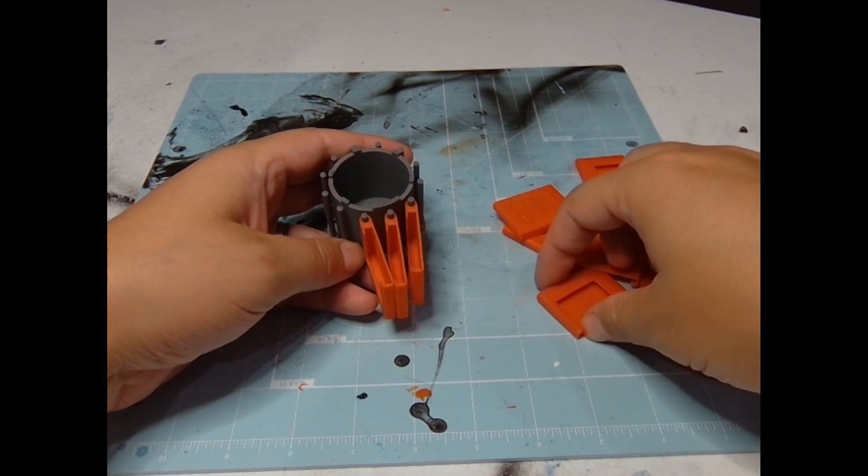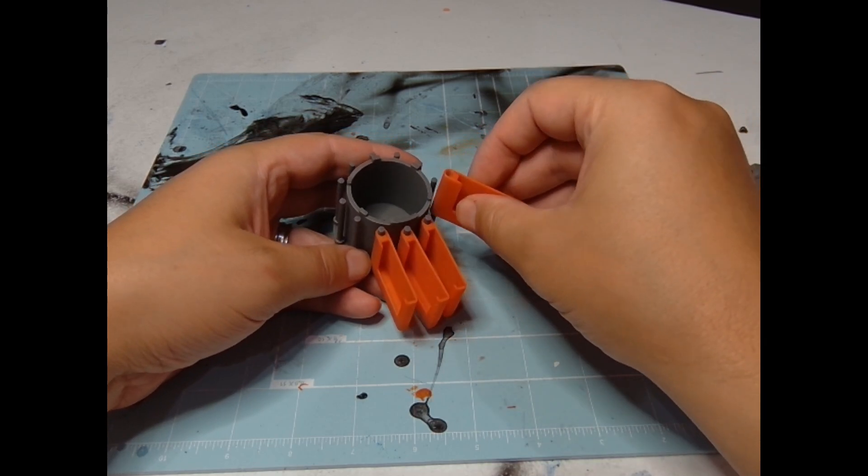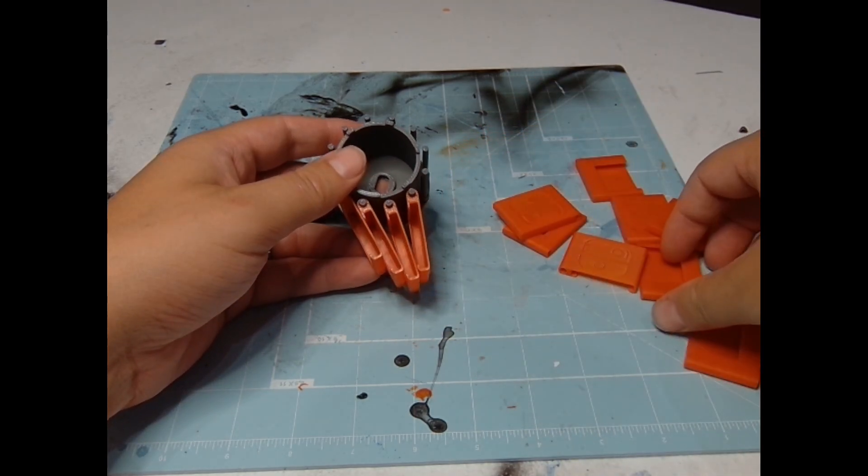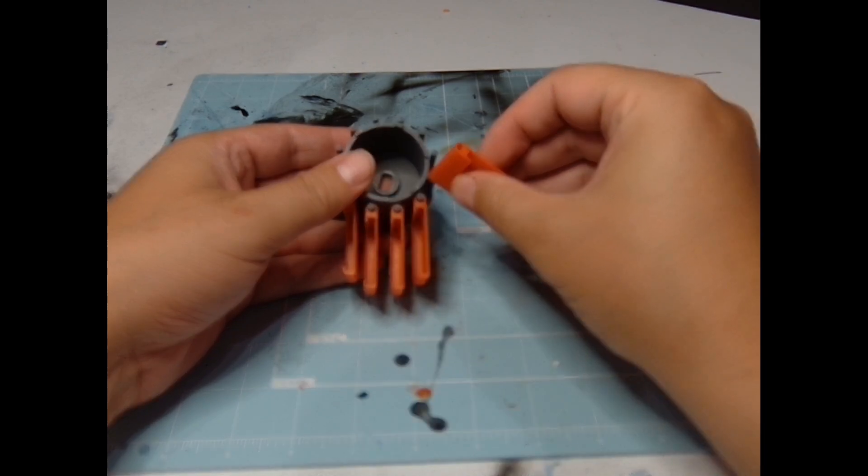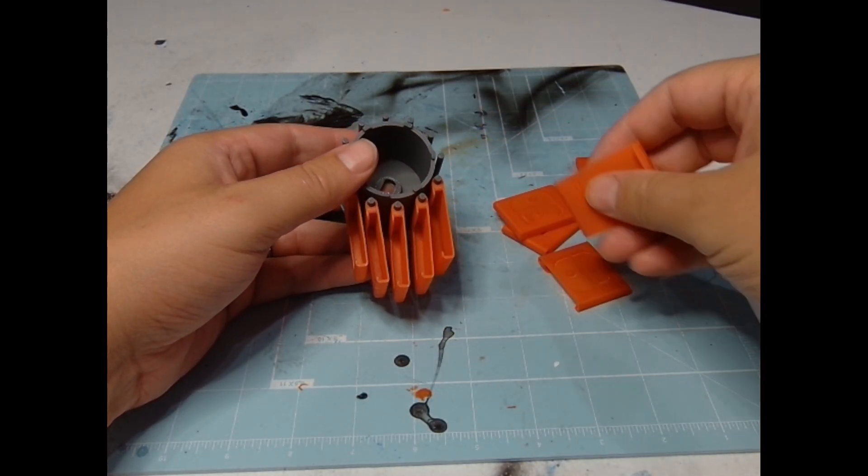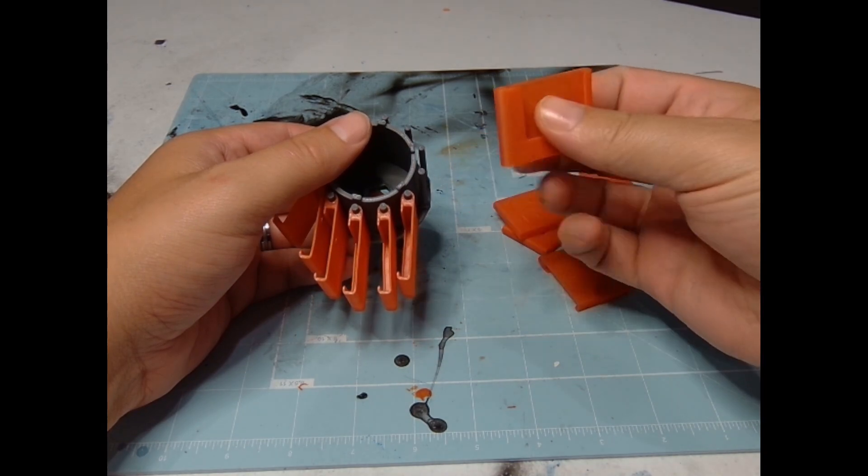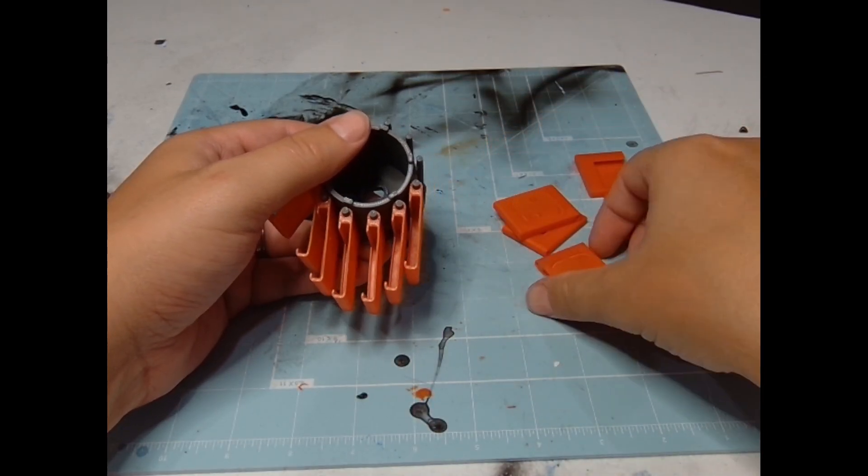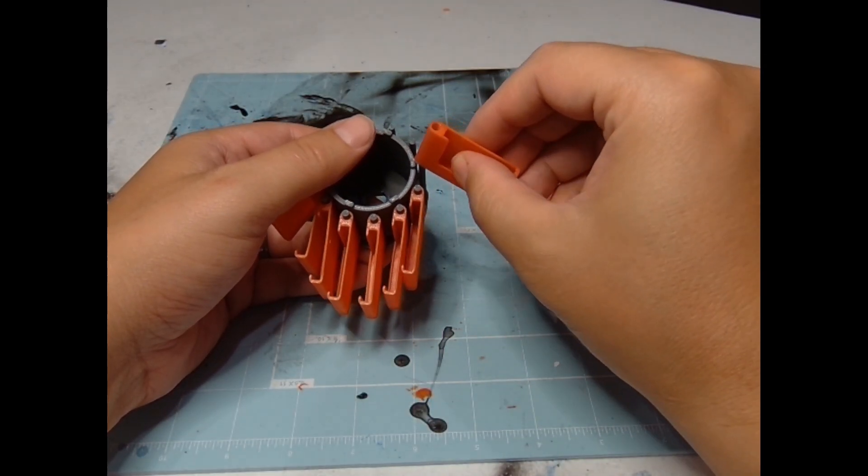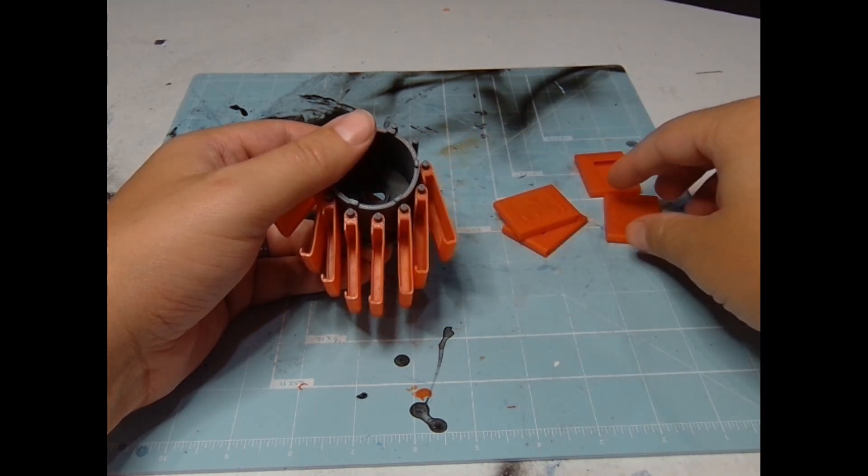So starting off, you're going to take the main drum with the spokes on it and put the cartridge holders on first. You're going to see two edges, one where the game slides in and the other one has a thicker edge. The thicker edge, the left side, that's going to go on the spoke first. So go around, place all 12 holders on the spokes and then we'll move to the next part.